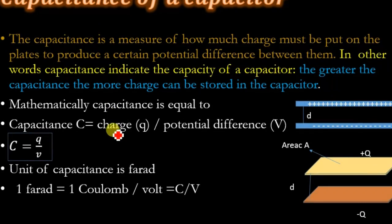Mathematically, the capacitance is equal to the charge Q divided by potential difference V. The unit of capacitance is farad, and one farad is equal to one coulomb divided by one volt, C = Q/V.